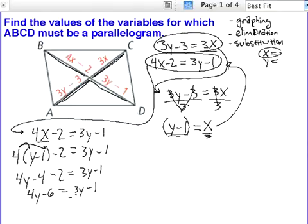I need to subtract 3y from both sides. So I get y minus 6 equals negative 1. I can add 6 to both sides, and I got y equals 5.